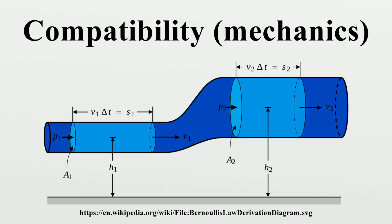In the context of infinitesimal strain theory, these conditions are equivalent to stating that the displacements in a body can be obtained by integrating the strains. Such an integration is possible if the Saint-Venant tensor vanishes in a simply connected body. For finite deformations, the compatibility conditions take the form of deformation gradient compatibility conditions.